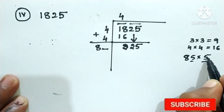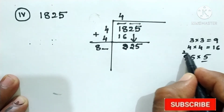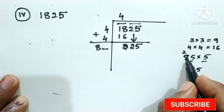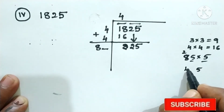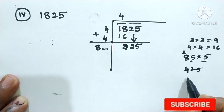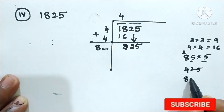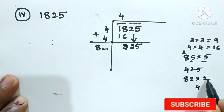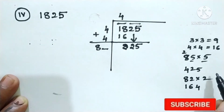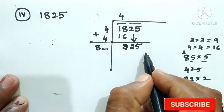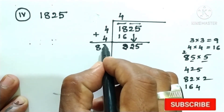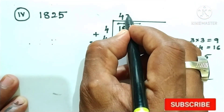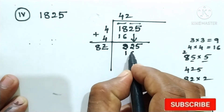Same numbers: 5 fives is 25, carry 2, 5 eights is 40 plus 2 is 42. Or you can take 82, then 82 into 2. Two twos is 4, two eights is 16, giving 164. If you take 3, that is greater than 225, so we take 82 into 2, which equals 164.